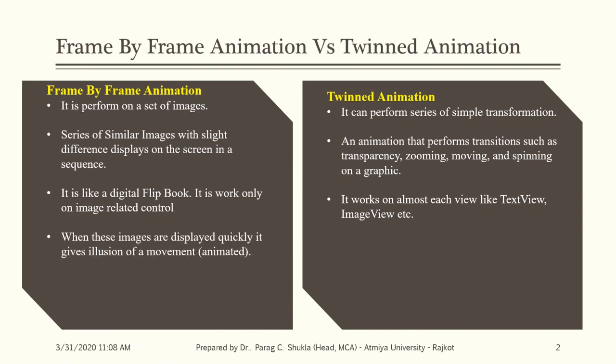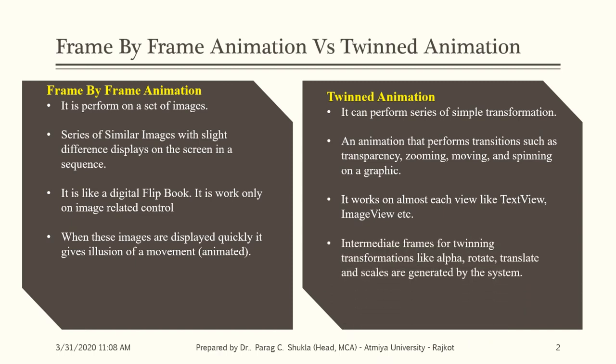When images are displayed quickly in frame-by-frame animation, it gives the illusion of movement — it looks like an animated movie. In tween animation, intermediate frames are required; for example, when you are spinning an object, those intermediate frames are generated and rendered by the system itself.